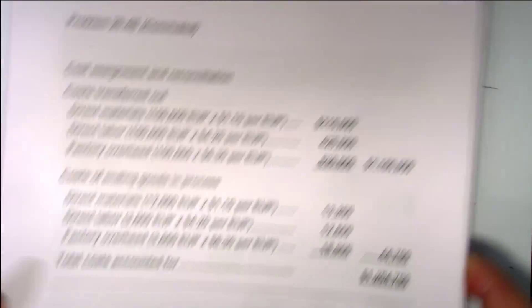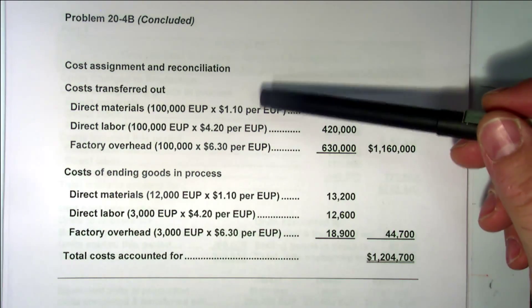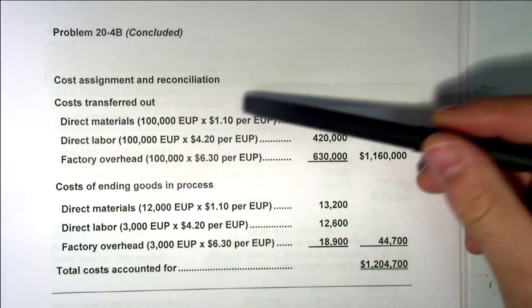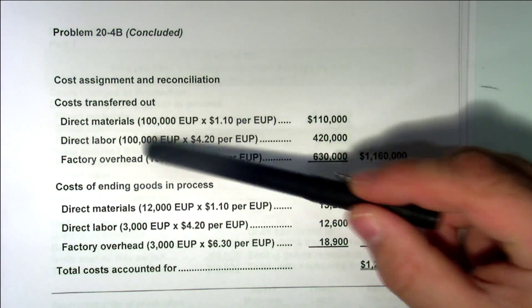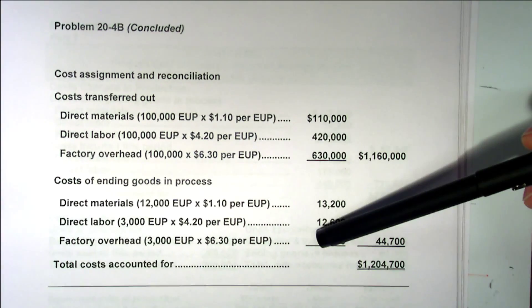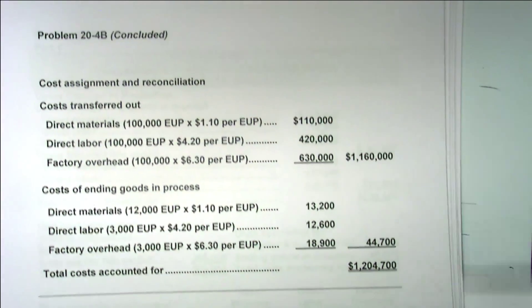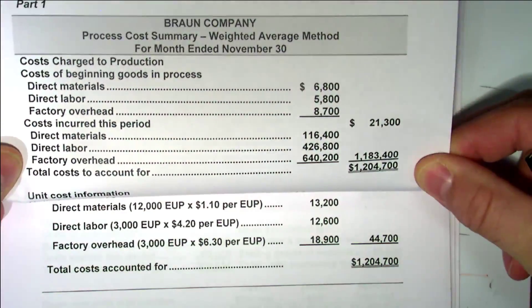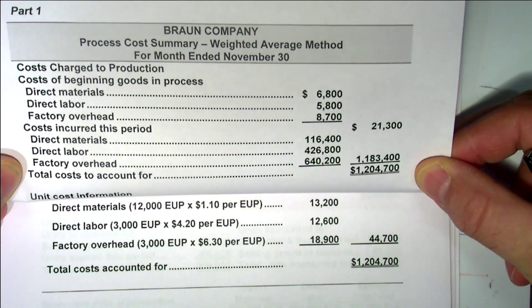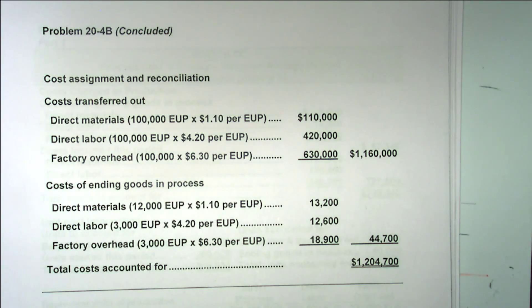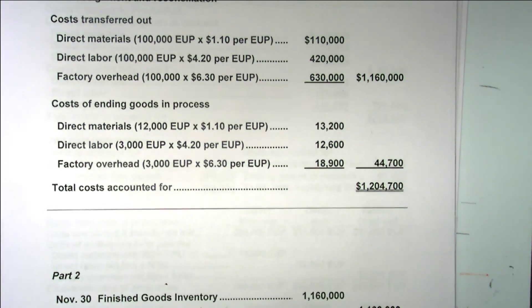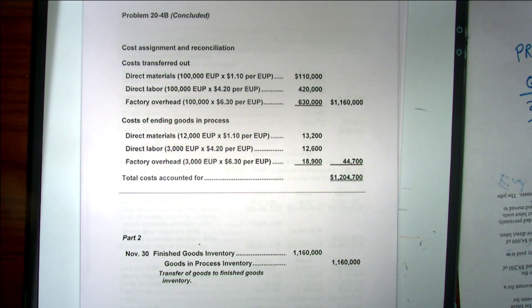Then we continue on and we have our last cost assignment and reconciliation. We take those equivalent units of production — the cost per EUP — put those there, take those equivalent units of production that we solved for earlier, we compute these numbers, we add those numbers up, and of course the big question is does that number equal this number from the first page — and it does. So which of those numbers goes down to the journal entry? The cost transferred out. So the journal entry is thus.